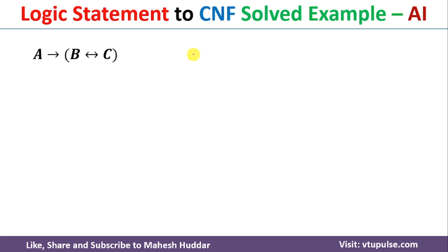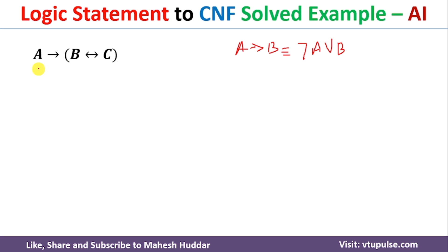What those rules say is: whenever we have implications or biconditionals, we need to convert them into conjunctions or disjunctions. For example, A implies B can be written as negation of A disjunction B. So we replace A implies the second statement with negation of A disjunction the second statement. In the second statement, we have a biconditional, which we need to replace next.